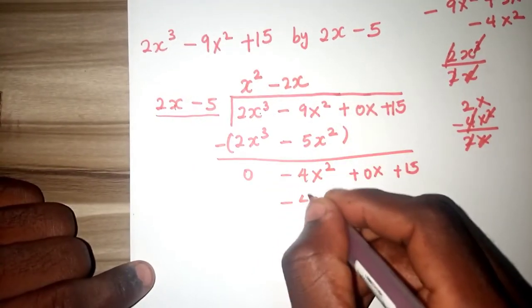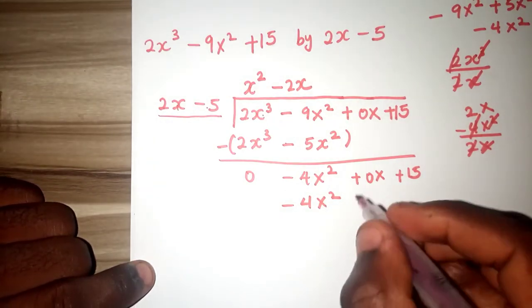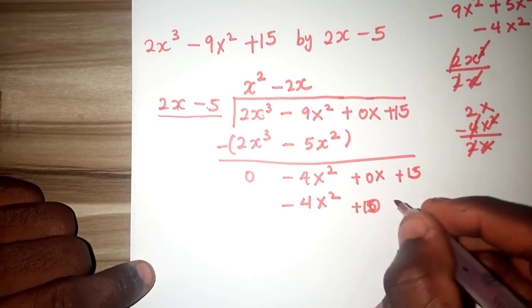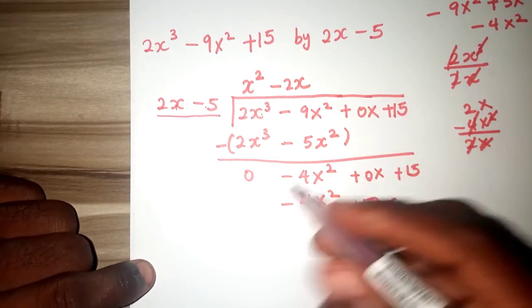Multiply again, you have minus 4x squared, then using your 5 to multiply, plus 5, plus 10x. Now you can see the reason why I input this 0.